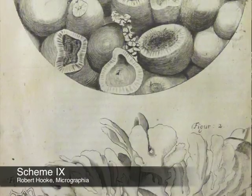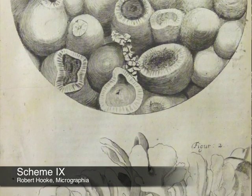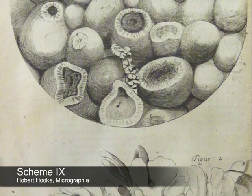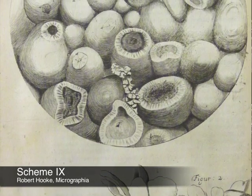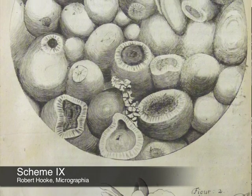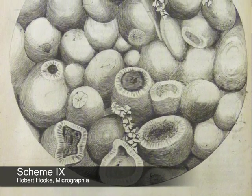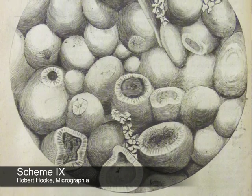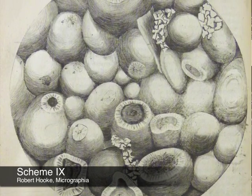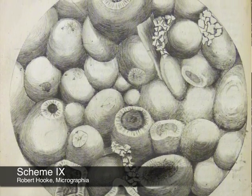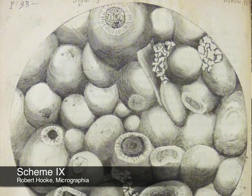Hooke was the first scientist to examine fossils under the microscope and the first to note the similarities between living shells and fossil shells, which had, up to that time, been considered a type of stone rather than a once-living organism. More than 200 years before Darwin, Hooke had discovered that changes in life on Earth were documented in the fossil record.